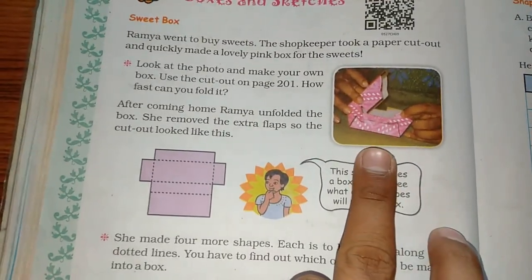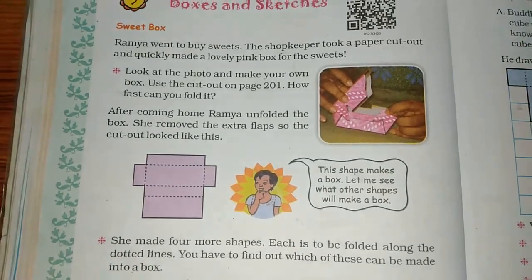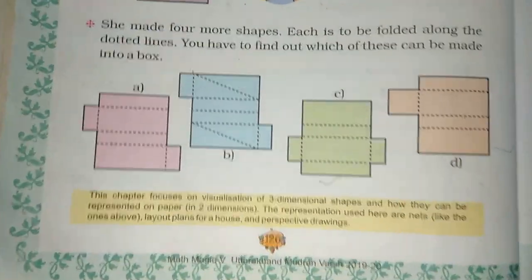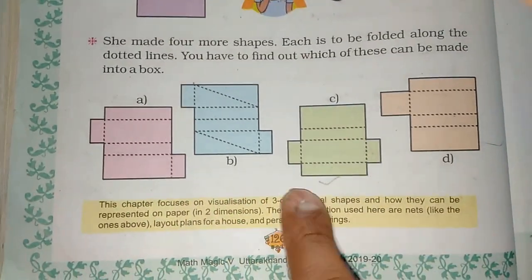This is the sweet box. The last page is cut and cut. Yes sir. Now we have four shapes. This is B, C and D. Now we are talking about dotted lines.